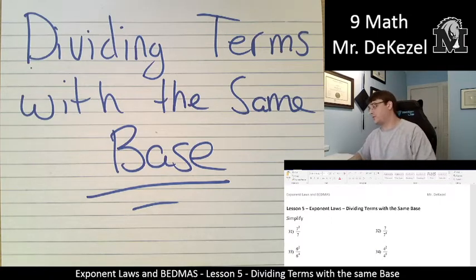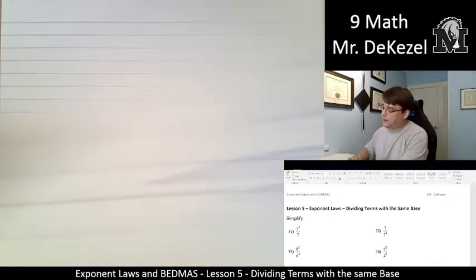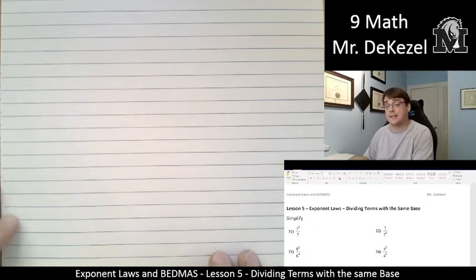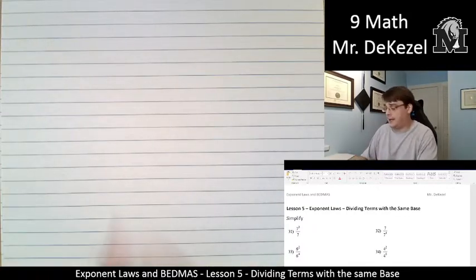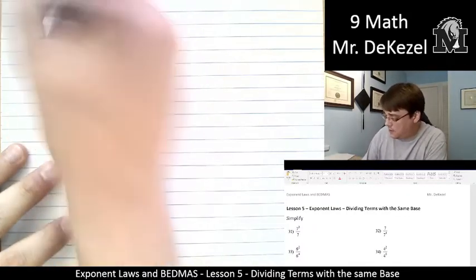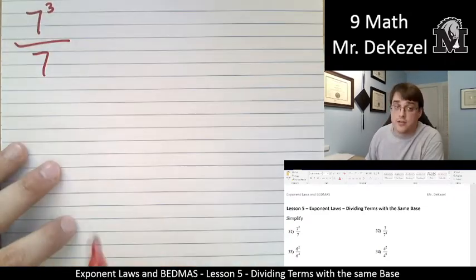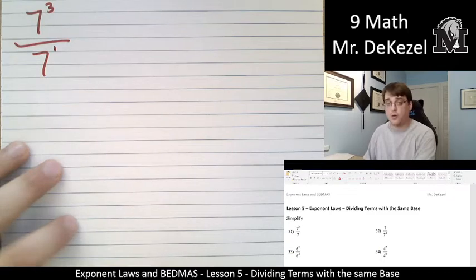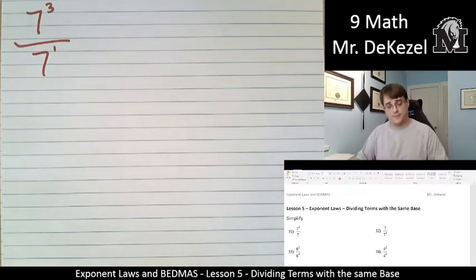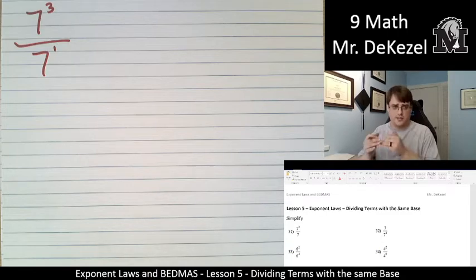Let's go to the first problem. What better way than with an example? We have 7 to the power of 3 divided by 7. And when there's nothing there, it's to the power of 1. So when the bases are the same, 7 and 7 are the same, they're the bases, and you're dividing them by each other, you're going to subtract the exponents.